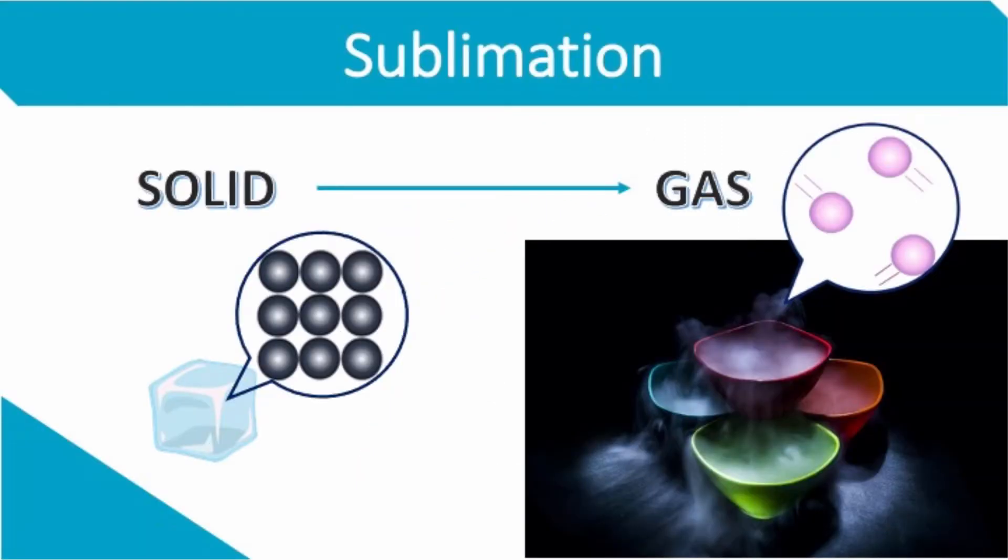There are special circumstances where when heat is added to a solid, it skips the melting phase and immediately transforms into a gas. This is called sublimation. An example of this is dry ice.